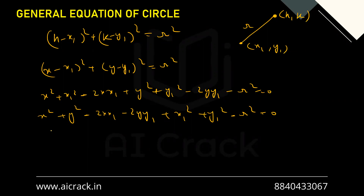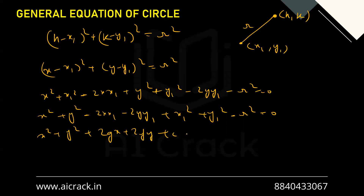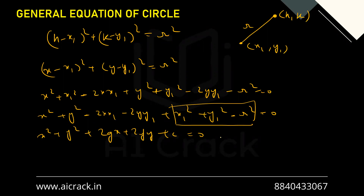This equation looks complex, so for any generic circle equation we use the standard format x² + y² + 2gx + 2fy + c = 0. Here c is the constant term. We removed the minus signs and rewrote in this standard format. Now we need to find the relations between g and x₁, f and y₁, and c and the remaining part.